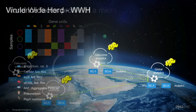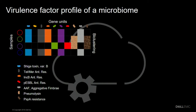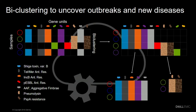Using WWH, we wrote a distributed application where each sequencing center calculates the profile of virulence factors in all the biomes it has sampled. Each sequencing center then sends that profile to a center selected to do a global computation. That center uses bi-clustering to identify combinations of virulence factors among subsets of the microbiomes that have been sampled anywhere in the world.